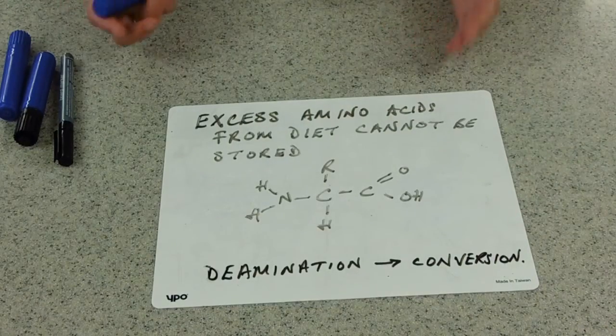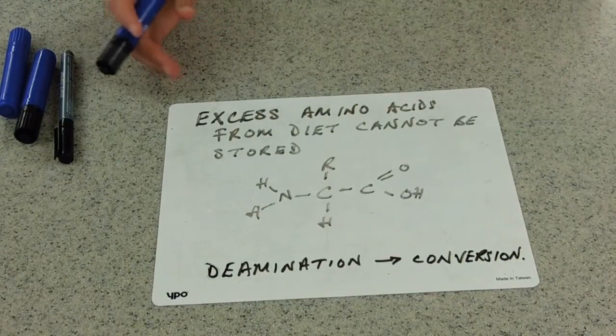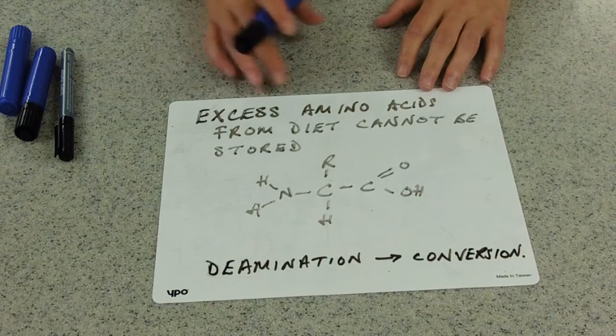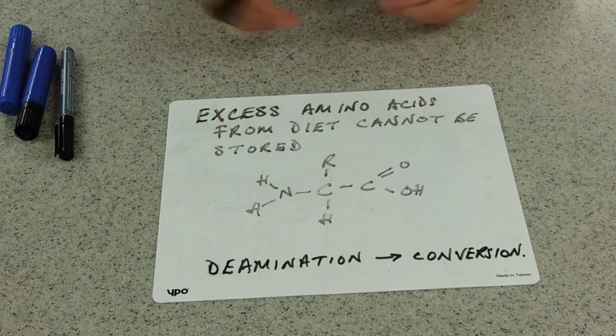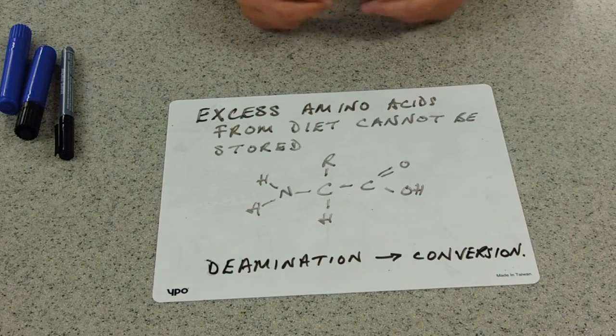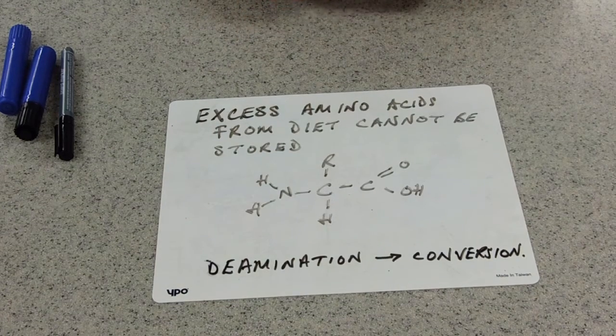But there are always some left over in a high protein diet like we have in the West. So our excess amino acids, the ones that we can't use to make up other proteins, they can't be stored. So we need to deaminate them first.